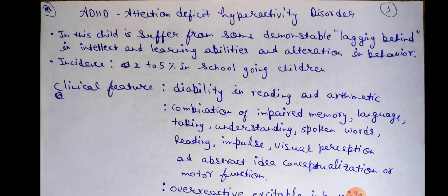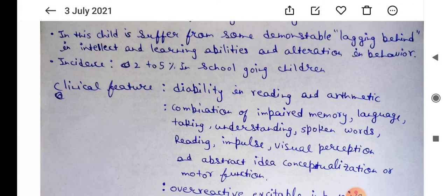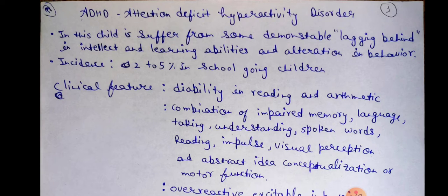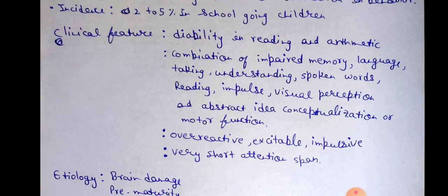Disability in reading and arithmetic. A combination of impaired memory, language, talking, understanding spoken words, reading, impulse control, visual perception, abstract ideas, conceptualization, or motor function. Also: overreaction, excitability, impulsivity, and very short attention span.